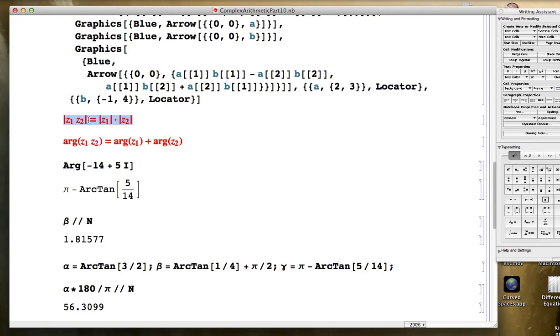This equation right here says the modulus of the product of two complex numbers z1 and z2 equals the product of their individual moduli, the modulus of z1 times the modulus of z2. In other words, the distance of the product to the origin is the product of the distances of each of the factors to the origin.